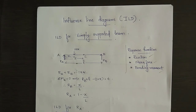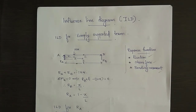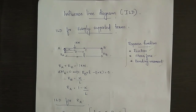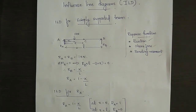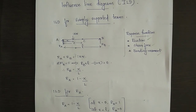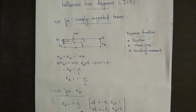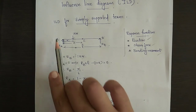Now we are going to draw the ILD for RA. We have already calculated the equation for RA as 1 minus X by L. At X equal to 0, RA equals 1, and at X equal to L, RA equals 0.